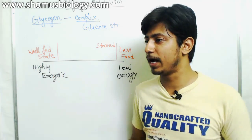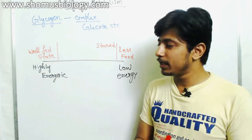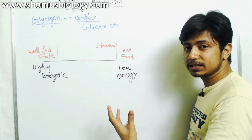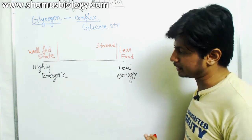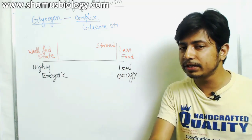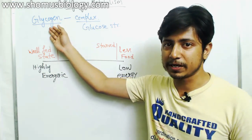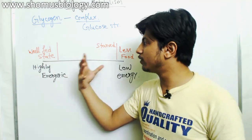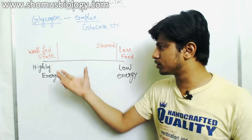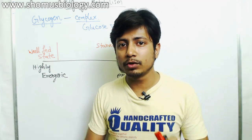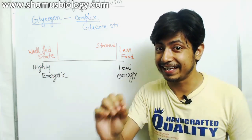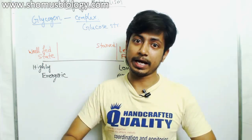In the well-fed state, your body will be highly energetic because you have carbohydrates — you break them down and generate energy. When you don't have carbohydrates in your cells, you fail to generate a proper amount of energy and feel low energetic. It's all about carbohydrate: the simplest form is glucose, and the complex form is glycogen. When well-fed, you have plenty of glucose in your bloodstream, more than you need at that moment.